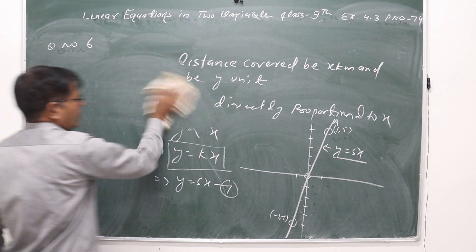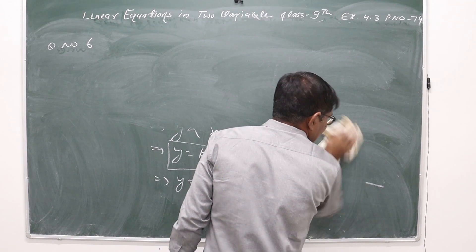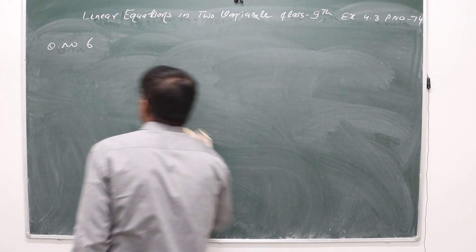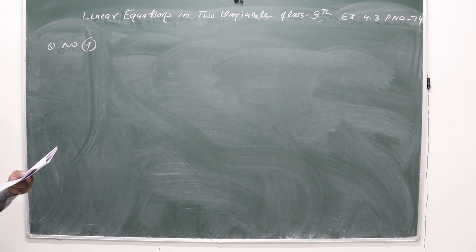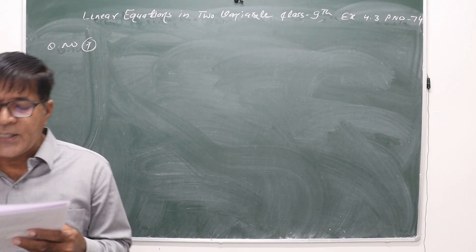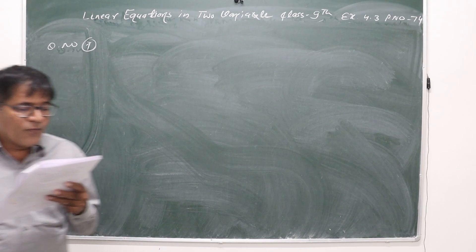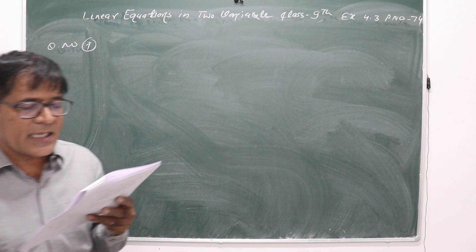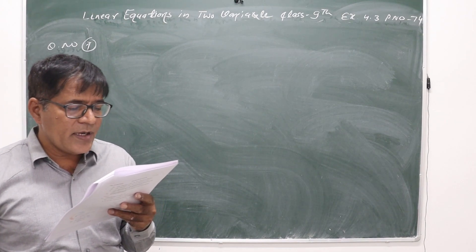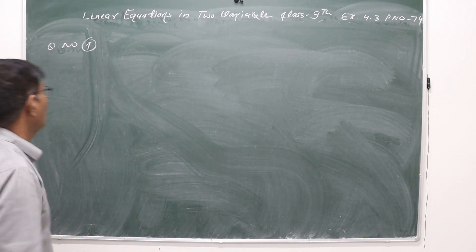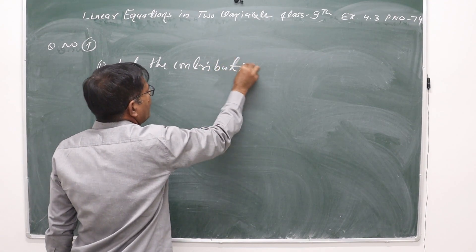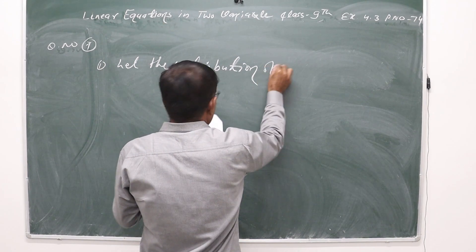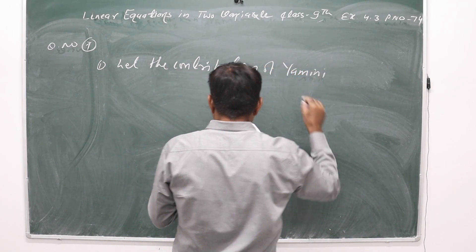Now question number 7, also an important question. Yamini and Fatima, two students of Class 9 of a school, together contributed Rs. 100 to the Prime Minister's Relief Fund to help earthquake victims. Write a linear equation which satisfies this data. Let the contribution of Yamini be Rs. x.